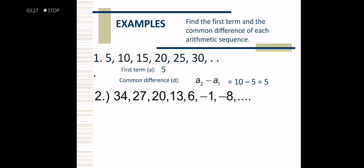Next example: 34, 27, 20, 13, 6, negative 1, and negative 8. We do the same process. Our first term is 34. For our common difference, we subtract 27 by 34 and that is negative 7.